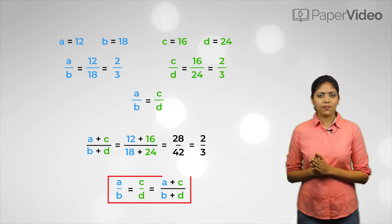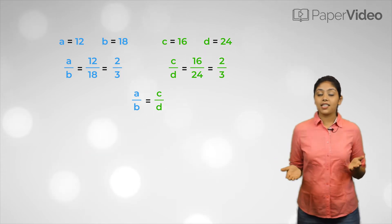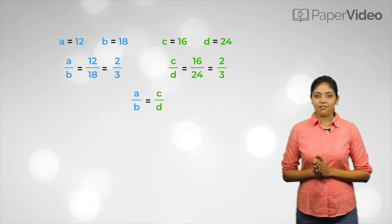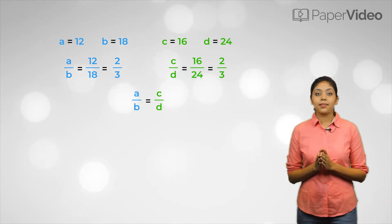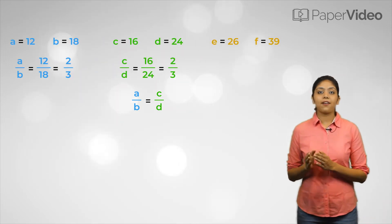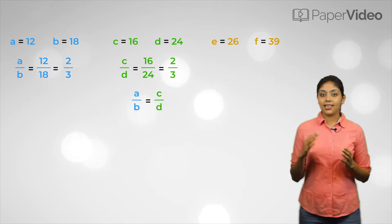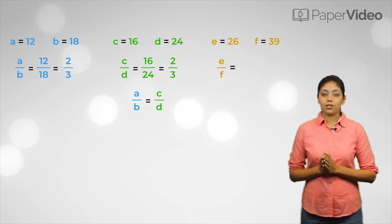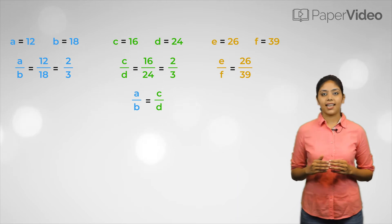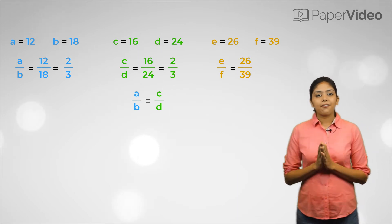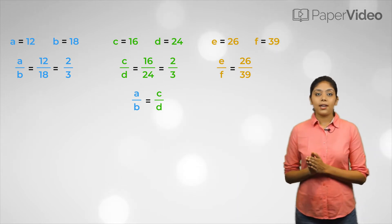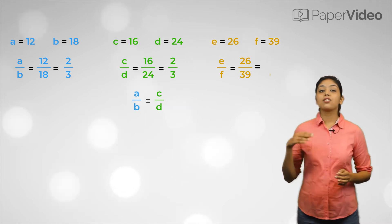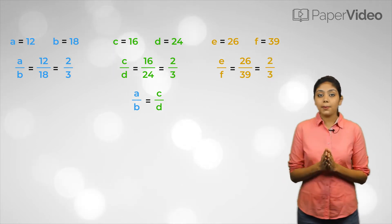We are experimenting with another ratio, e upon f. Let us assume that the values of e and f are as given. Then the ratio e upon f equals 26 upon 39. If we divide the numerator and denominator of this ratio by 13, we will get 2 upon 3.